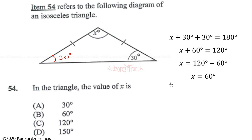There was a mistake earlier — the correct working is 180 minus 60 equals 120. So x = 120 degrees. Checking: 120 + 30 + 30 = 180. The correct answer is x = 120 degrees.